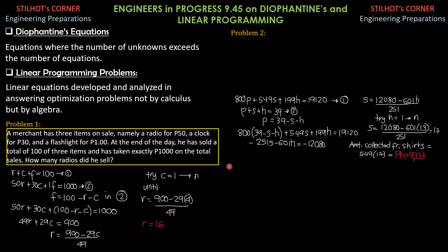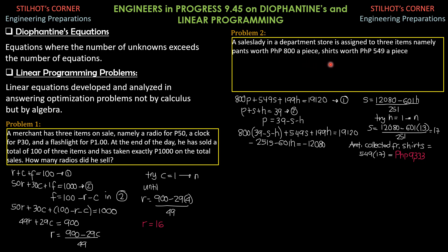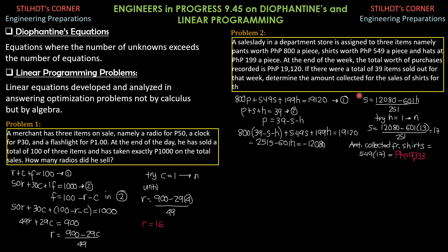So, we begin to problem 2. Let's have a situation where the answer may be not just one but many possibilities. A sales lady in a department store is assigned to 3 items namely pants worth 800 pesos a piece, shirts worth 549 a piece, and hats at 199 a piece. At the end of the week, the total worth of purchases recorded is 19,120. If there were a total of 39 items sold out for that week, determine the amount collected for the sales of shirts for that week.